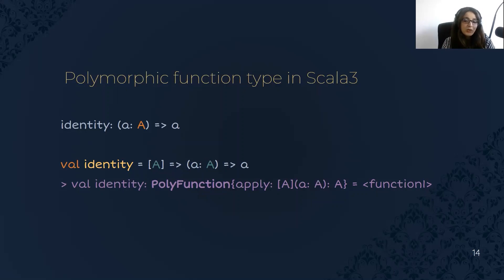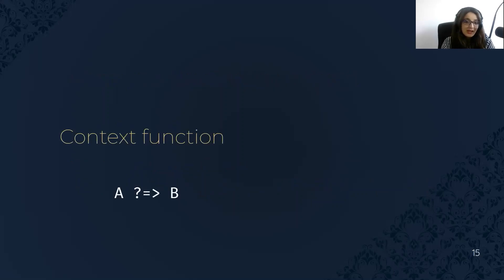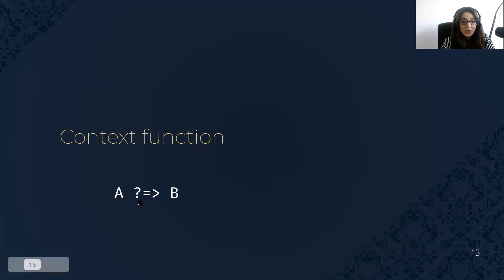How about methods with implicit arguments? We can do that too. In Scala 3, there is a feature called context function. We can define a context function using the question-mark arrow syntax, which means this function requires an implicit value of type A and returns a B. Let's take an example to understand this.